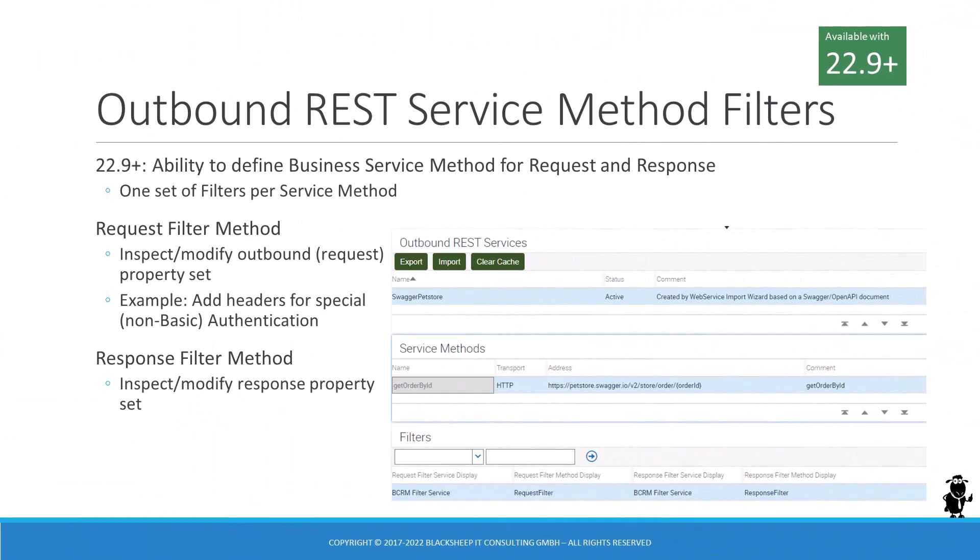A new list applet, Filters, has been added to the outbound REST services view. After importing the external specification, this applet allows the definition of two business service methods: one for request, the other for response. At runtime, the request filter method will be invoked before the request is actually sent. The property set representing the request data can be inspected and modified. For example, developers can add HTTP headers to support more advanced authentication mechanisms than basic authentication. When the response is returned from the external service, the response filter method can be used to inspect or modify the result property set before it's processed by the proxy.